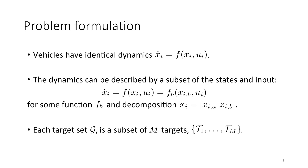Before we talk about our approach, I'll first discuss the notation and assumptions we are making. All the vehicles have identical dynamics, x_i dot equals f(x_i, u_i), and we assume the dynamics structure is such that it can be described by a subset of the states and the input. The state x_i can be decomposed into x_iA and x_iB, where the dynamics depend only on x_iB and u_i. Many dynamical systems fall into this category, such as 3D Dubins cars or quadrotor dynamics, where x_iA represents the translational components (X, Y, Z coordinates) and x_iB represents the rotational states and velocities.